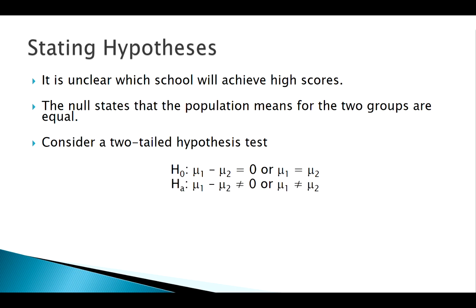My null is that school one equal to school two. My alternative here, go with a two-tailed test. And let's just use alpha of 0.05.